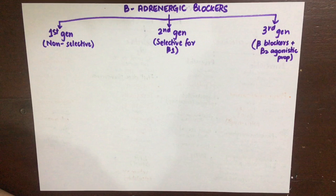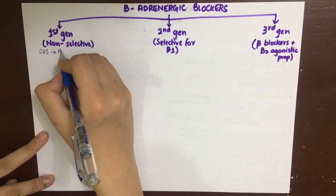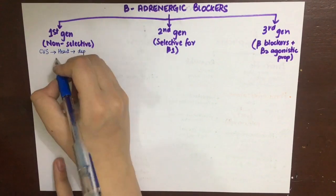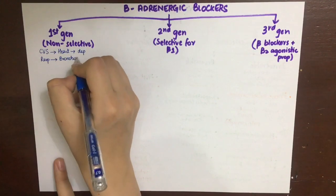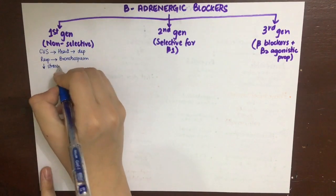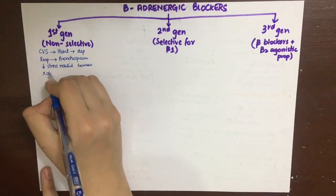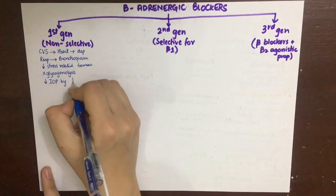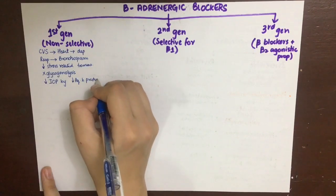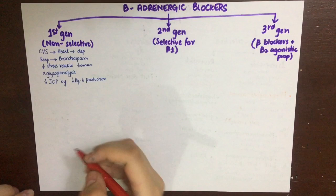These correspond to first, second, and third generations. First-generation beta blockers are non-selective for beta-1 and beta-2. In the cardiovascular system, beta-1 blockade decreases heart rate, conduction velocity, and inotropic effect; beta-2 blockade causes vasoconstriction. In the respiratory system, they cause bronchospasm. They also decrease stress-related tremors by inhibiting glycogenolysis in skeletal muscle and decrease intraocular pressure by reducing aqueous humor production.